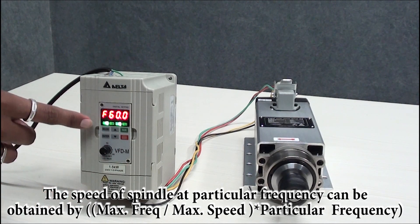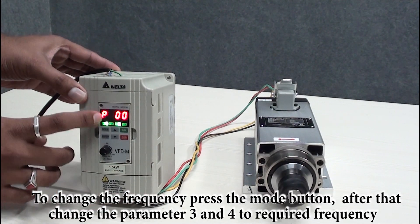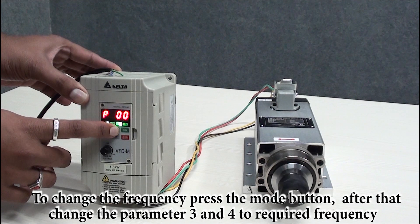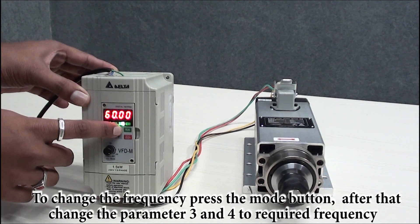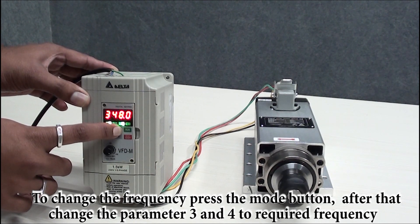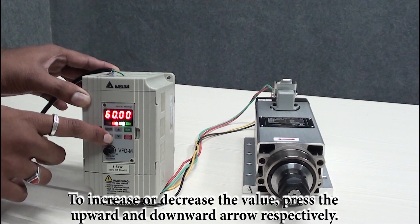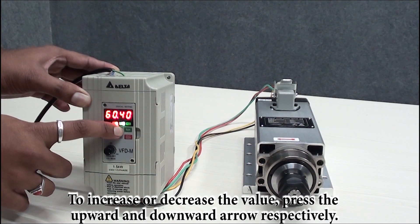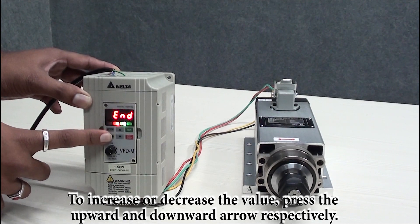Now how to change the parameter: press the mode button. P is for the parameter. Go to parameter 3, press enter. This is 60 hertz by default. Now you can increase this to 400, press enter. Then same parameter 4, press enter which is 60, increase to 400, then press enter.